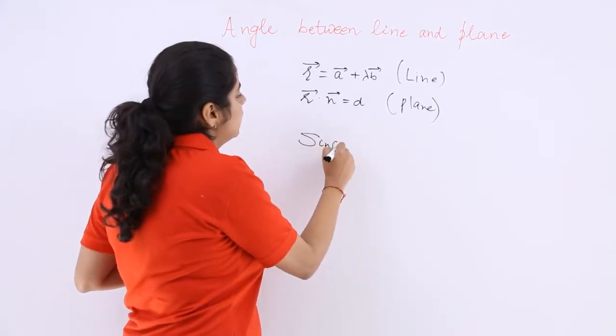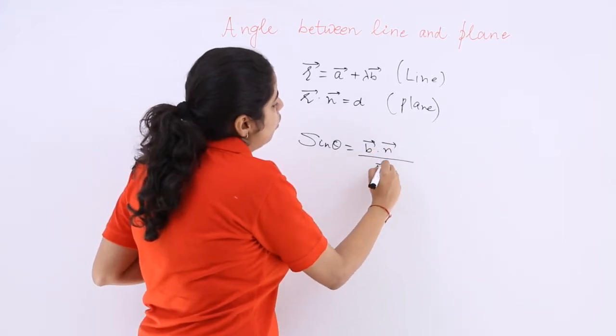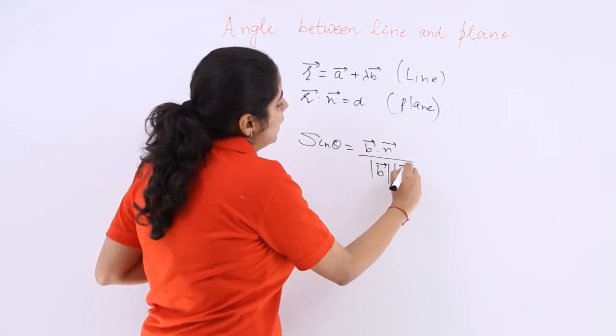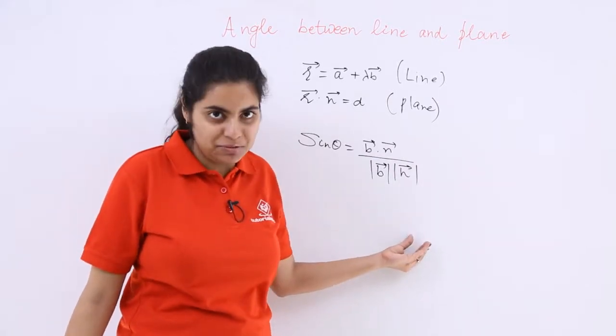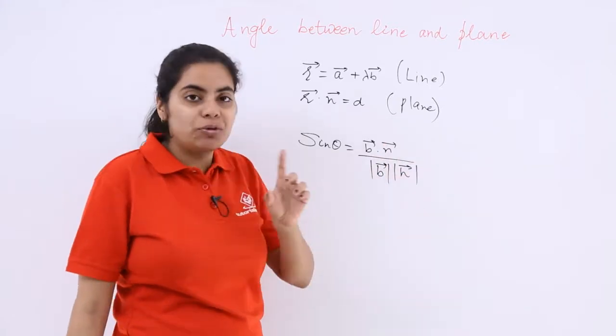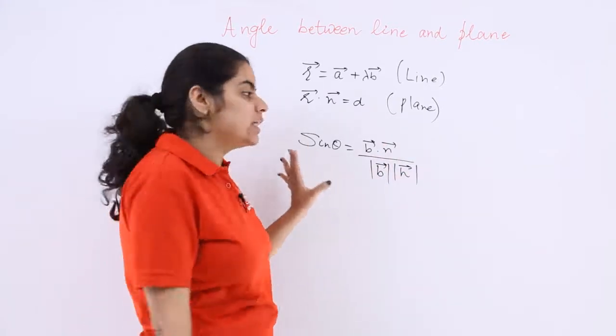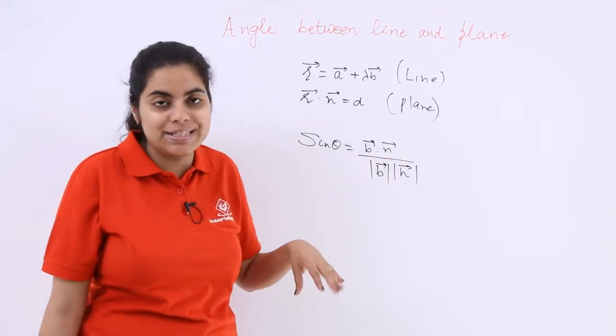The angle is given by sin theta equals b vector dot n vector divided by mod of b vector and mod of n vector. So this will come out to be the value of sin theta. You can compute and theta would be sin inverse of the whole expression inside.